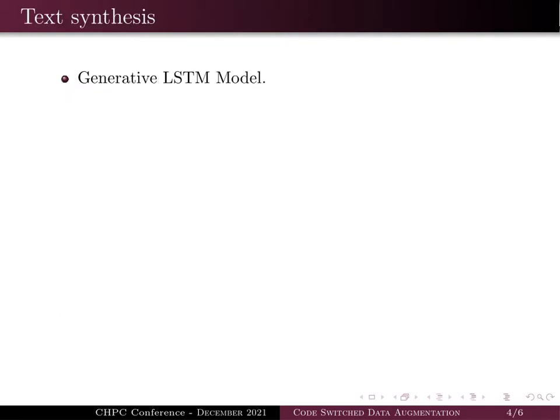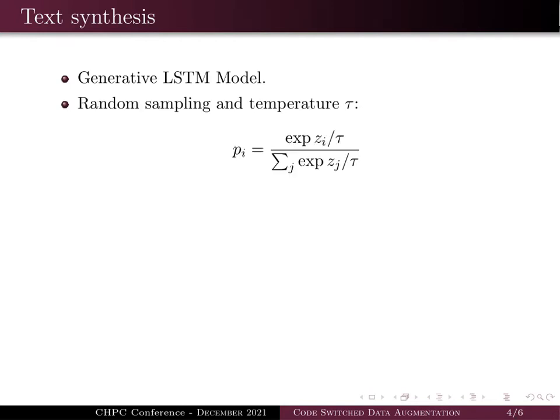We employ an LSTM language model to generate text. This is accomplished by randomly sampling the final layer of the network, which has dimensionality of the vocabulary, and a softmax layer. In the softmax layer we apply a heuristic temperature value which allows us to tune the word probabilities predicted by the network.